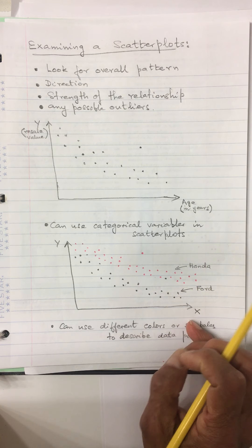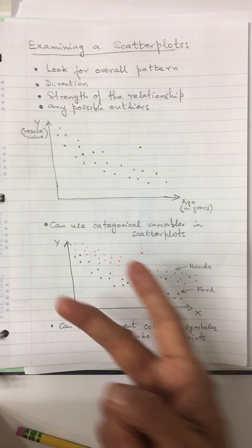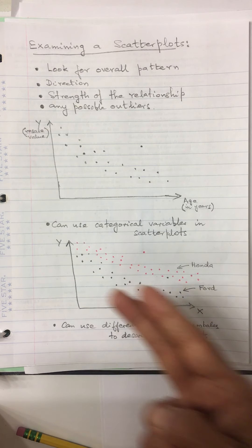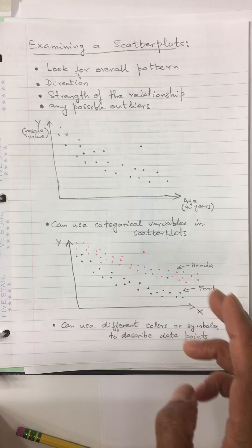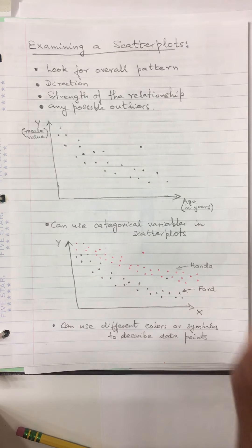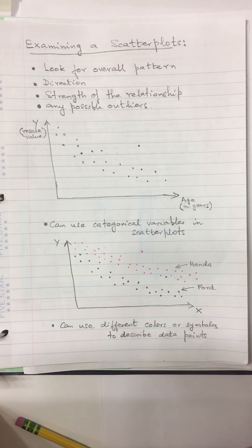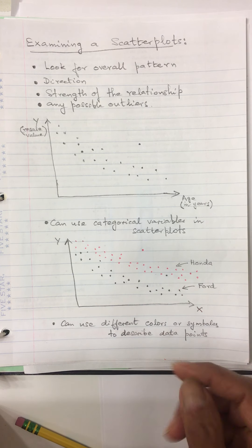You can also use categorical variables in scatter plots. For example, if you want to show Honda versus Ford in the same scatter diagram, you can use two different colors for each data point. These are the resale values for Honda cars and these are for Ford cars — showing which type holds resale value better. Just like side-by-side histograms, you can use different colors or symbols to distinguish data points.